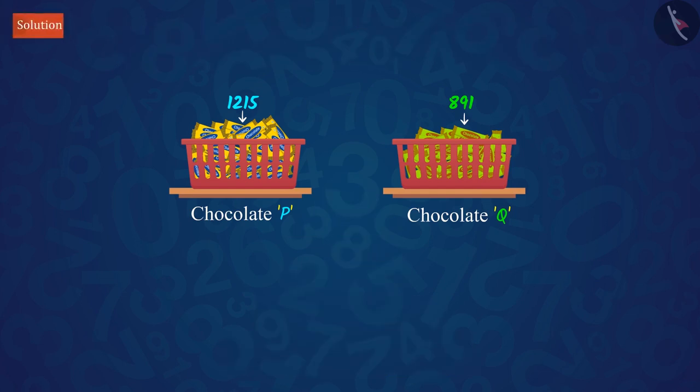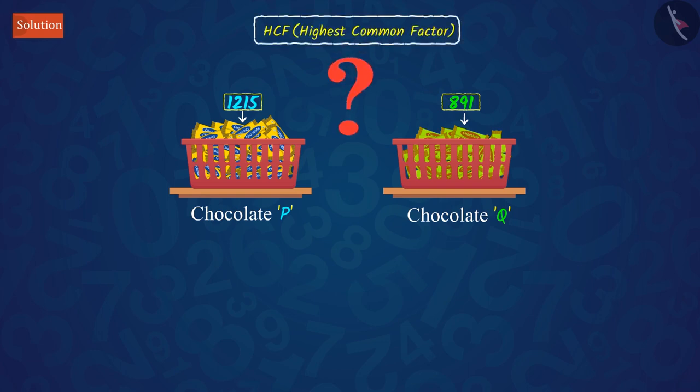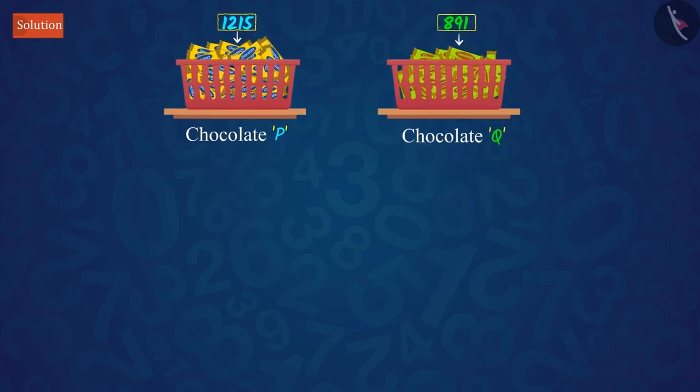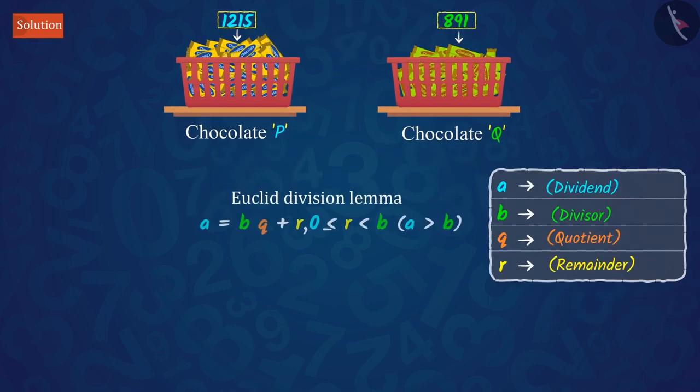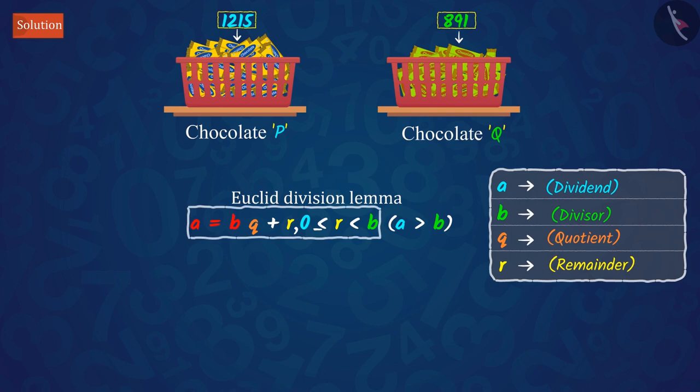You can also solve this by hit and trial method. But here, we will solve this in a step-wise manner, for which we will find the HCF, that is, highest common factor of the number of both types of chocolates. For this, we will use Euclid's division lemma: a = b × q + r. Let's try to solve it together.